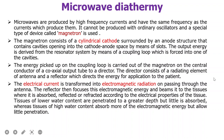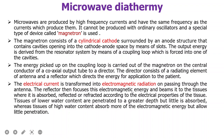A director is also used, which consists of an antenna and a reflector that directs the energy for application to the patient. The electrical current is transformed to electromagnetic radiation by passing through the antenna. Using the antenna, we are sending the electrical current as electromagnetic radiation. Then the reflector focuses this electromagnetic energy and beams it to tissues where it is absorbed, reflected, and refracted according to the electrical properties of the tissues.